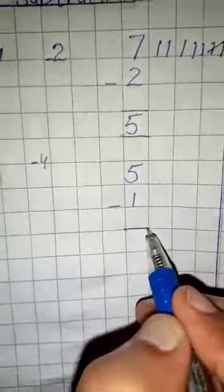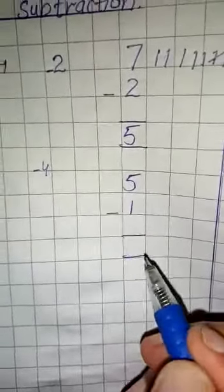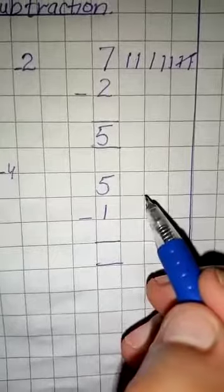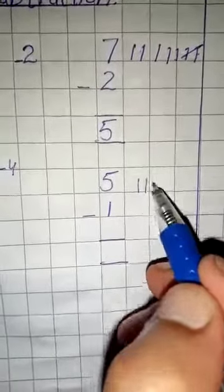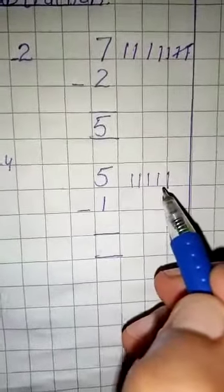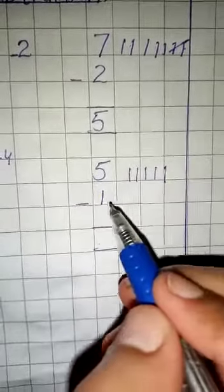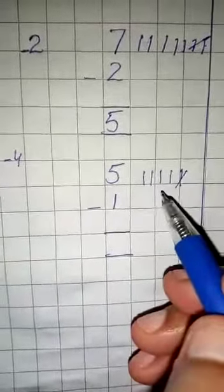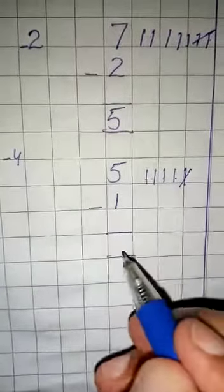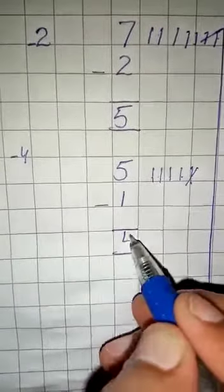Fourth question is 5 minus 1. We draw the lines: 1, 2, 3, 4, 5. Now how many lines we cut? 1. Now we will count the remaining lines: 1, 2, 3, 4. We will write 4.